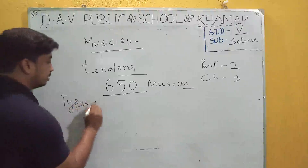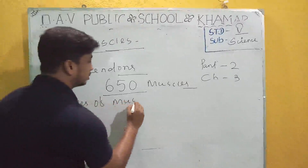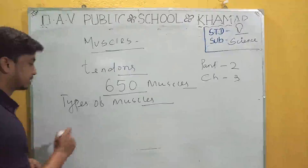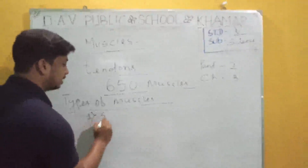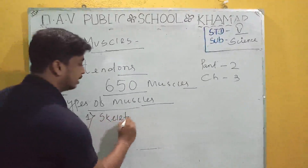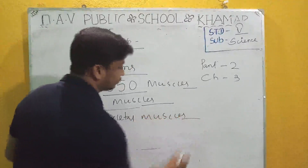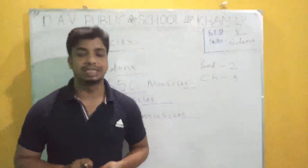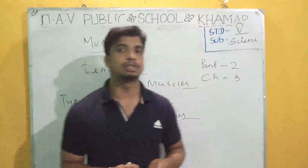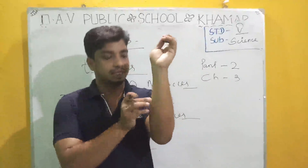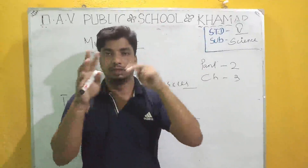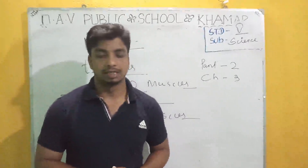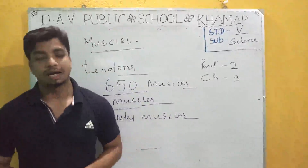Types of muscle. The first type is skeletal muscle. The skeletal muscles lie between the skin and bones. Skeletal muscles have voluntary movement — skeletal muscles can move at our will. We are using skeletal muscles when we are doing some work.